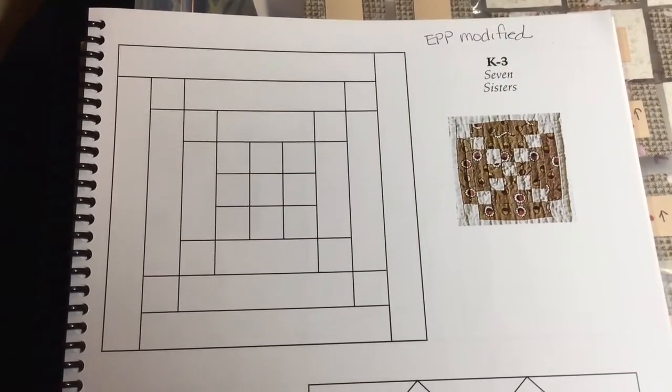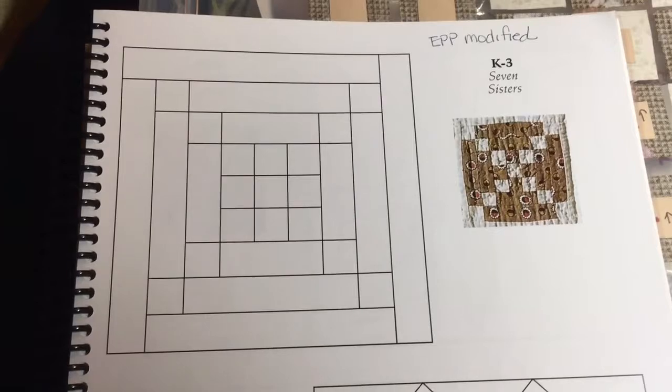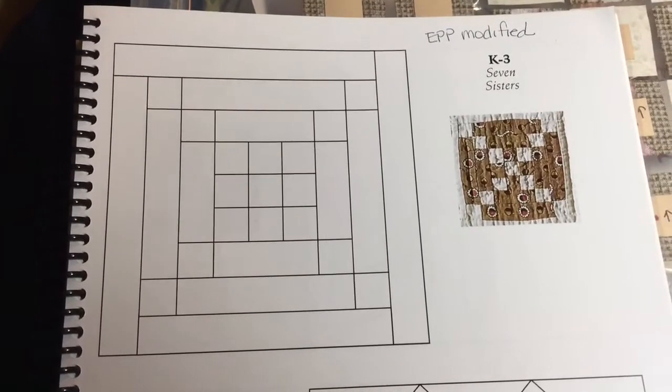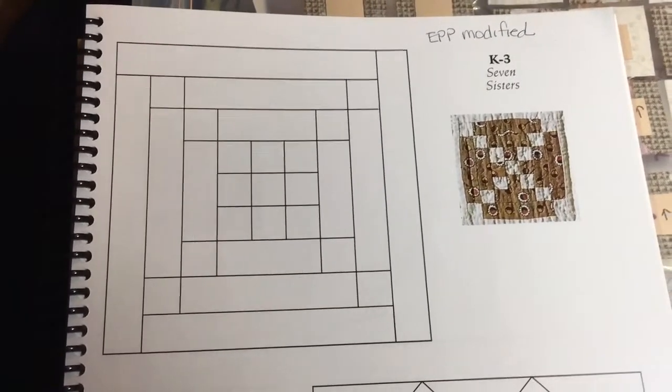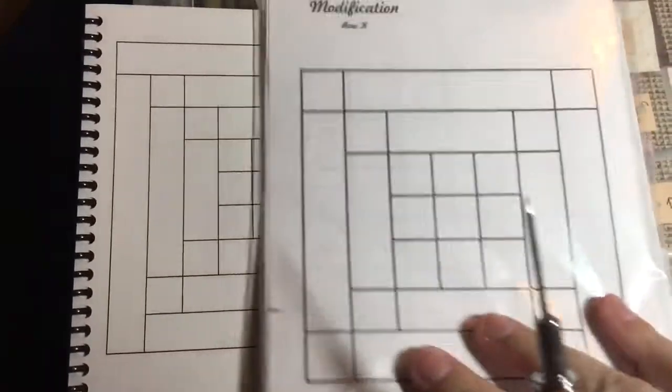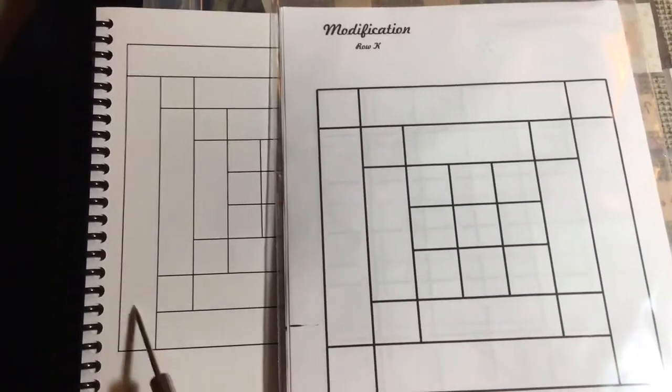Next block is K3, and K3 is assembled from the inside out. This is a modified block, so we're going to go to the book, and you have a simplified outside border.